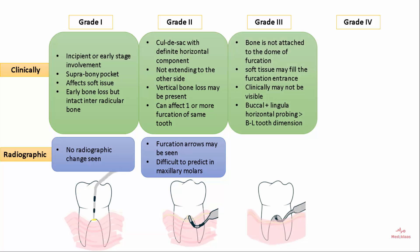In Grade 3 furcation, the bone is not attached to the dome of the furcation. The soft tissue may fill the furcation entrance and clinically it may or may not be visible. However, when you calculate the buccal and lingual horizontal probing depths, the sum will be more than the total buccal-lingual dimension. Radiographically, it is seen as a definite radiolucent area in the furcation zone.